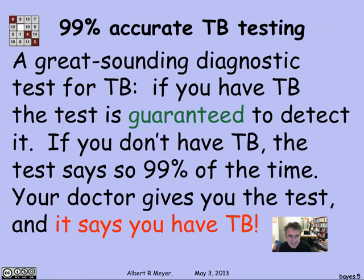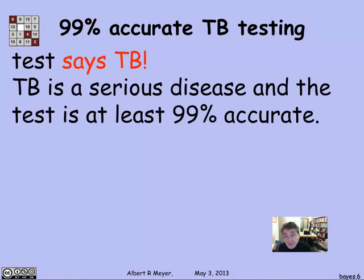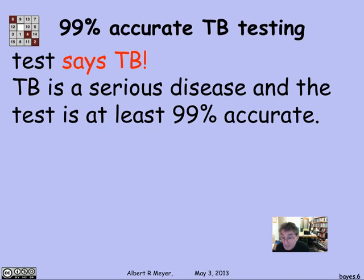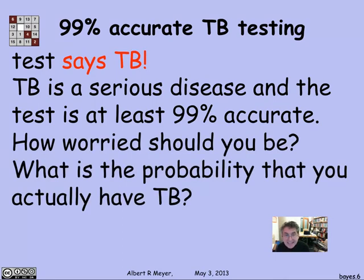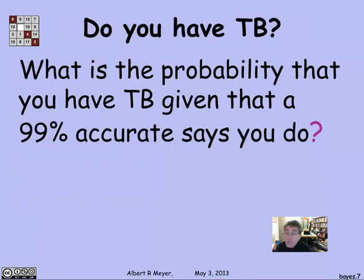Now suppose the doctor gives you the test and the test comes up saying that you have TB. That's kind of scary, because TB is quite a serious disease. It's getting worse because there are antibiotic resistant versions of TB now in Asia, where all the known antibiotics are not very effective at curing it. And this test that was 99% accurate says you have this disease. Should you really be worried? What is the probability, given that this apparently highly accurate test says you have TB, that you actually have TB?